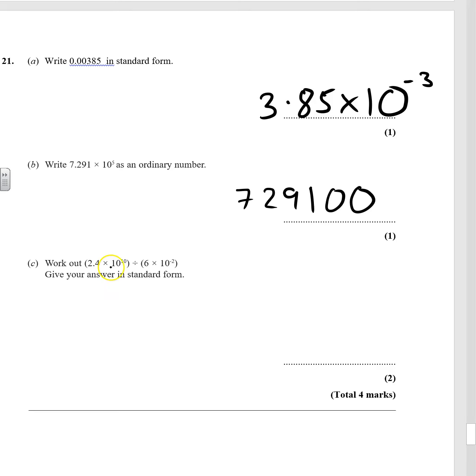Right, now 2.4 times 10 to the 10 divided by 6 times 10 to the minus 2. Let's do 2.4 divided by 6 first, which is 0.4. Now be careful because that's not in standard form. So we'll deal with that in a minute.